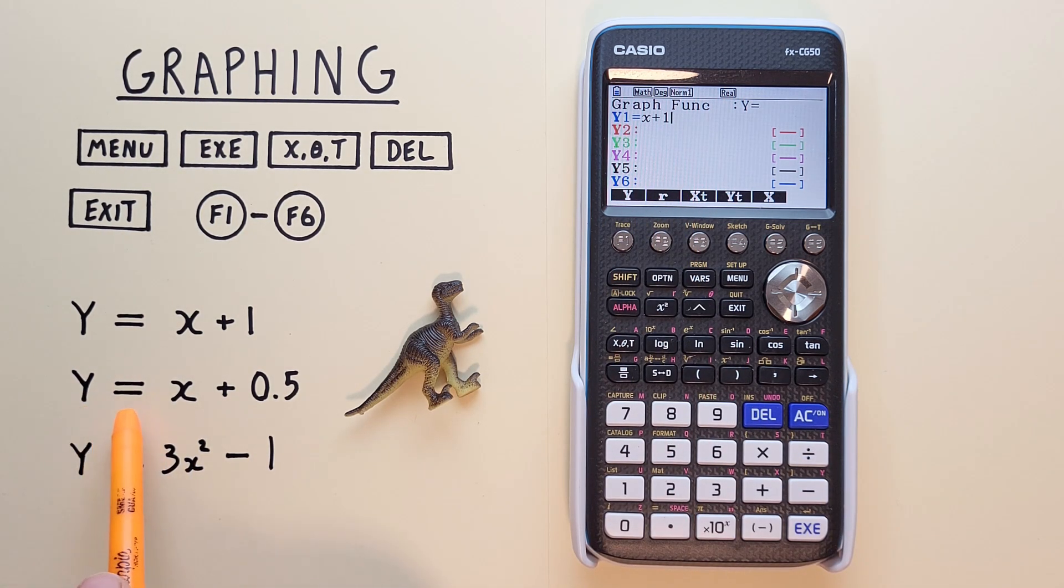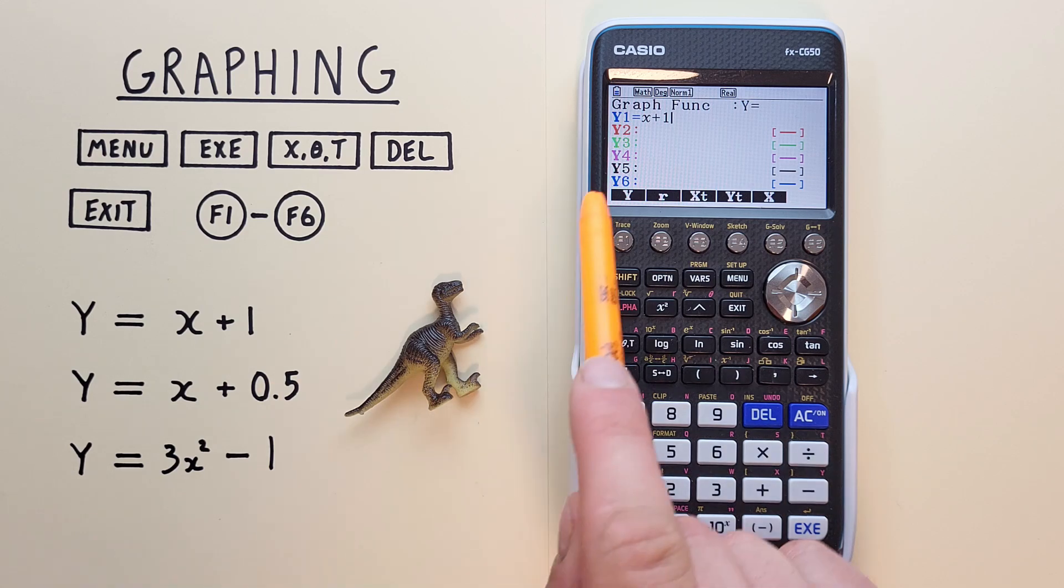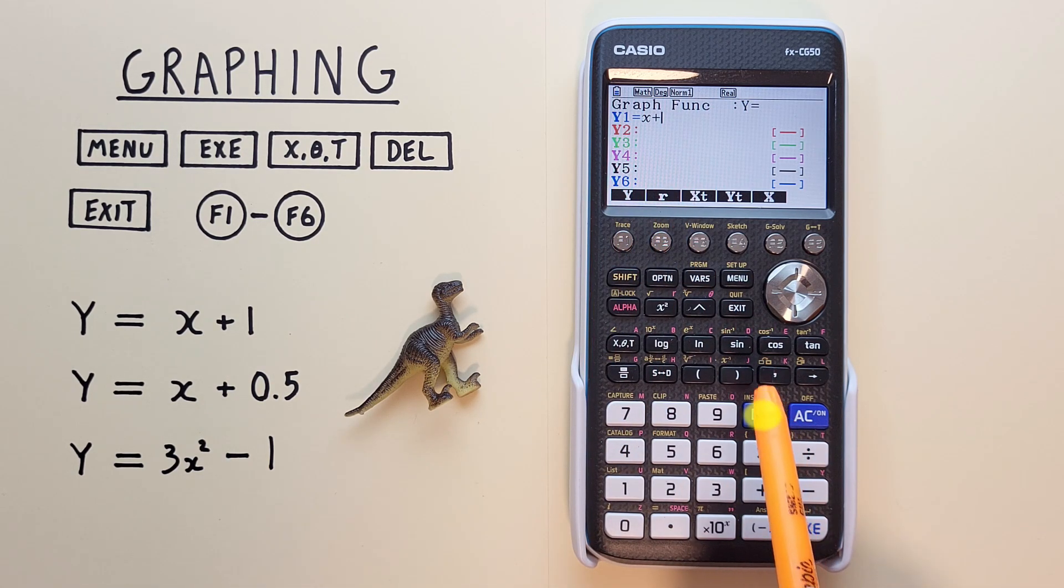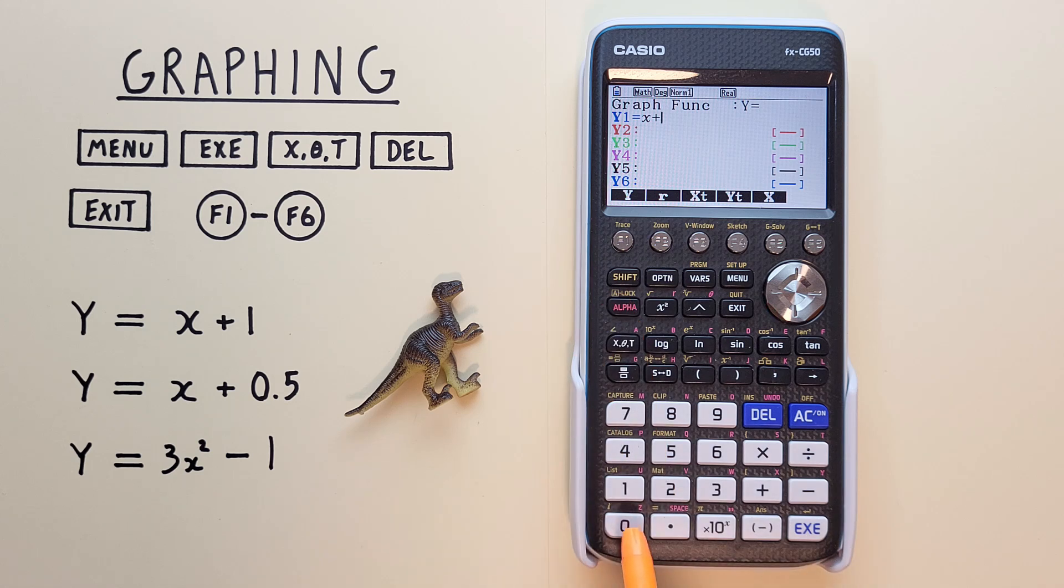Let's change it to Y equals X plus 0.5. So we've moved our cursor there, and we can press Delete to get rid of the 1, and then enter 0.5, and then 0.5 exe.